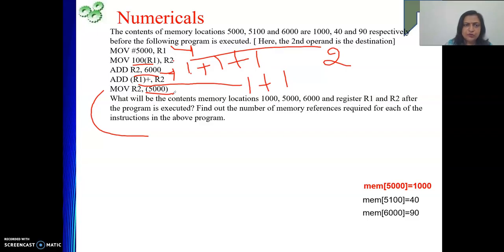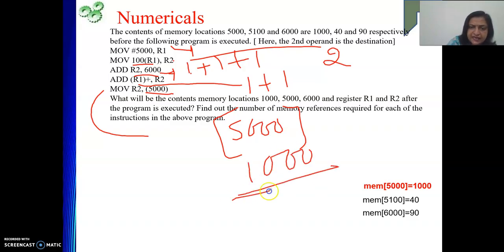So here it is move R2, (5000). So what it will do? Content of R2 will be written to a memory location. And that memory location is nothing but content of address 5000. Means at address 5000, we are going to get something. Say that is 1000. Something is there. We don't know. So at this address, your value of R2 will be written.